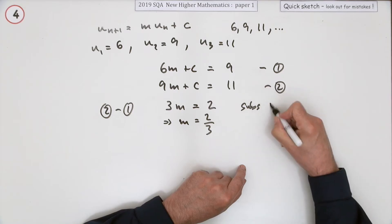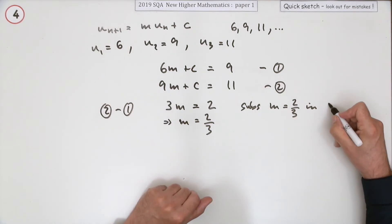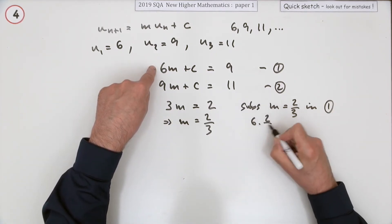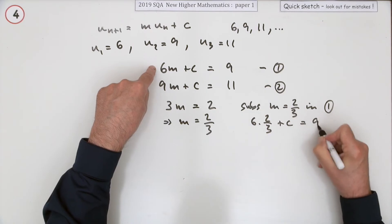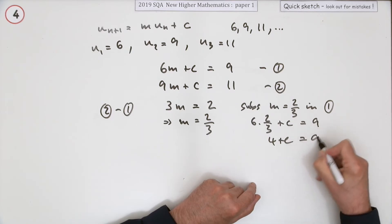And then knowing that, substituting M equals 2/3. And whichever equation takes your fancy, let's use equation 1. We've got 6 times 2/3 plus C equals 9. 3 goes into 6 twice, times 2 is 4. 4 plus C is 9, so C is 5.